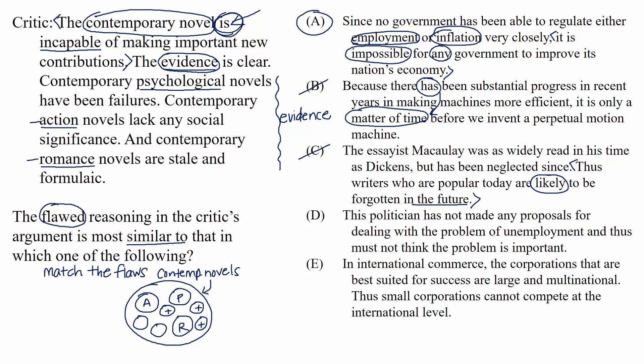Choice D: This politician has not made any proposals for dealing with the problem of unemployment and thus must not think the problem is important. We can eliminate this because the shift is between not making proposals about a problem and not thinking the problem is important. Certainly it's a flaw, but not the same kind as the passage. The passage eliminates something general because of two specific examples — we don't see that pattern in choice D.